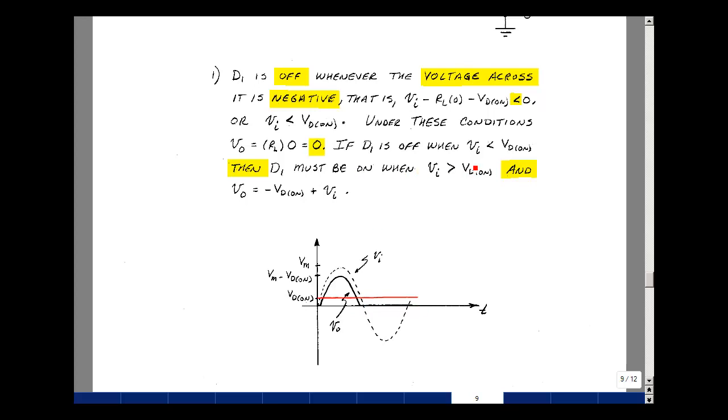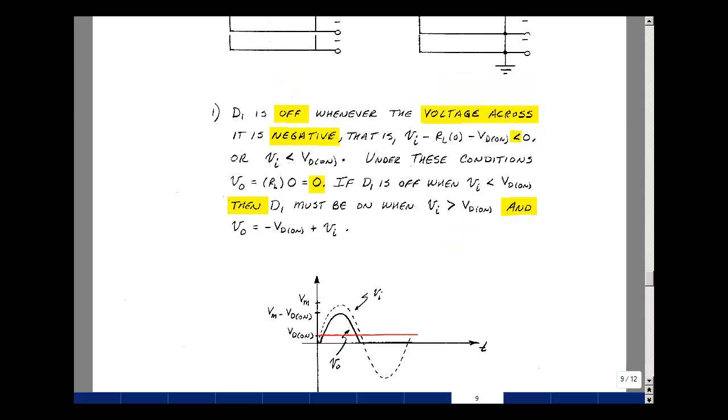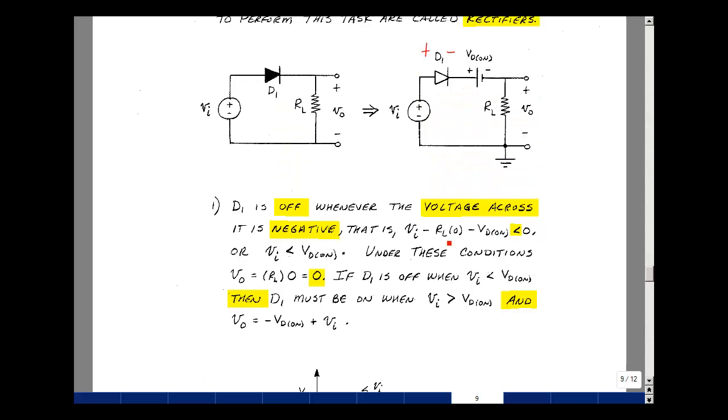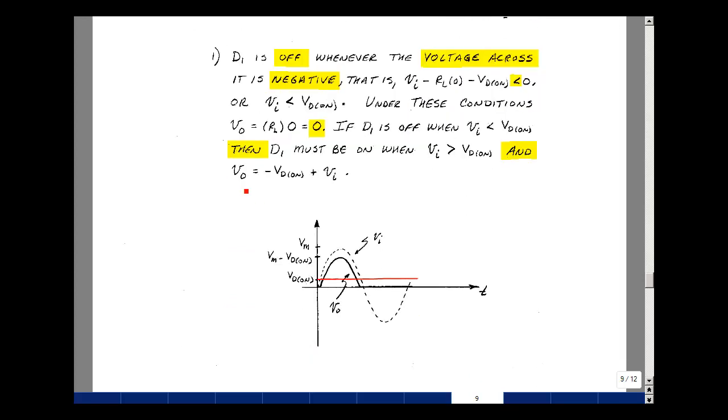If D1 is off when V sub i is less than VdN, then D1 must be on when Vi is greater than VdN. Because remember the diode can either be on or off. This would be the condition that's just the opposite of our off case. Now when that's true, go back to the circuit. The ideal diode is now a short circuit. And the output voltage, rise in voltage, equals the drops around the loops. Vout would be equal to minus VdN minus zero plus V sub i.